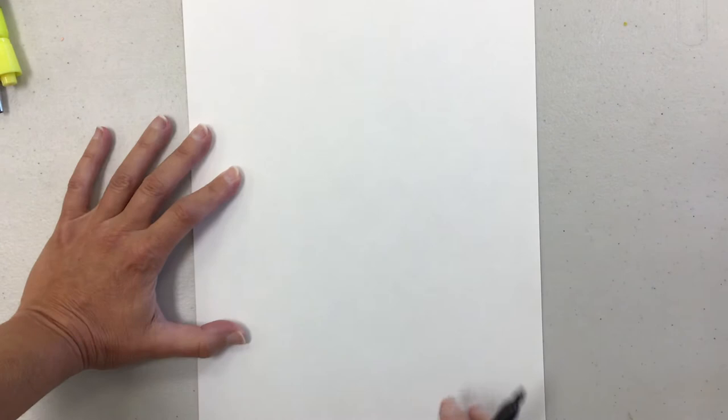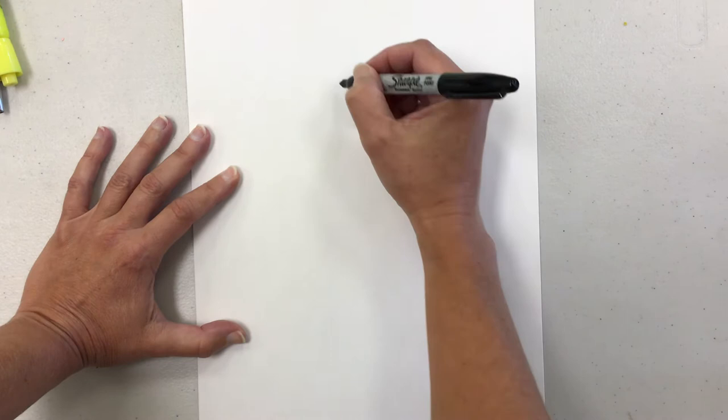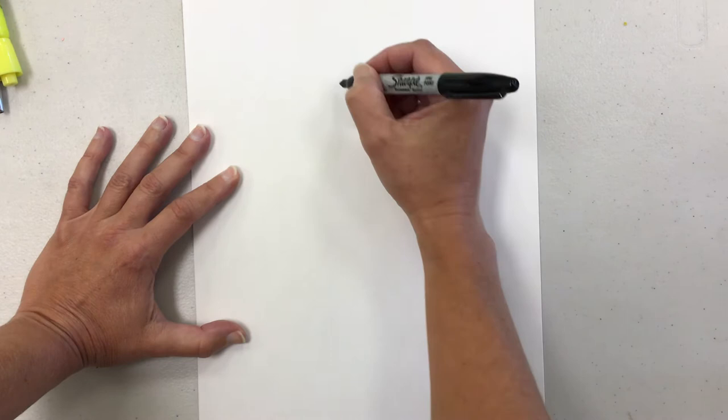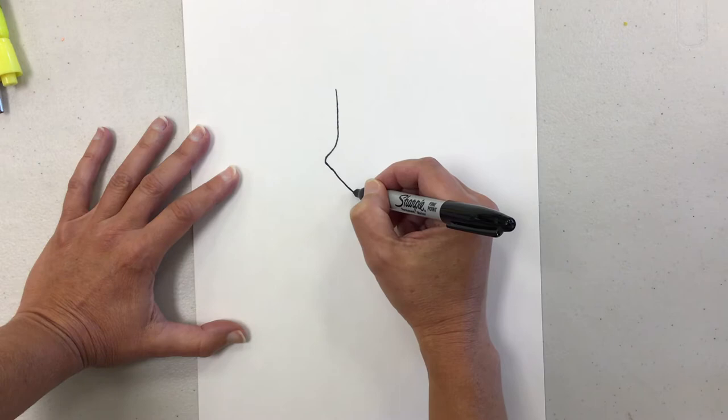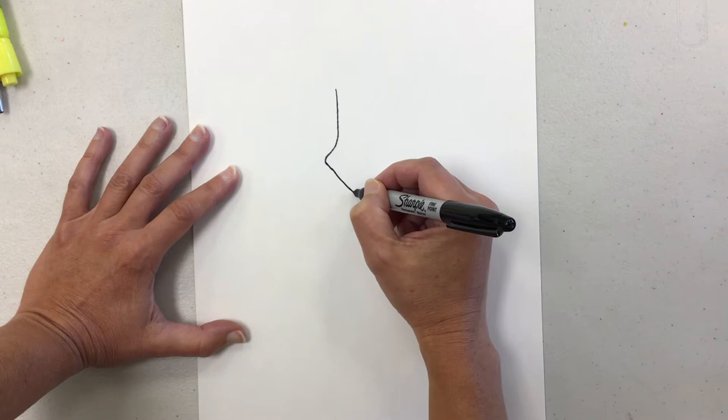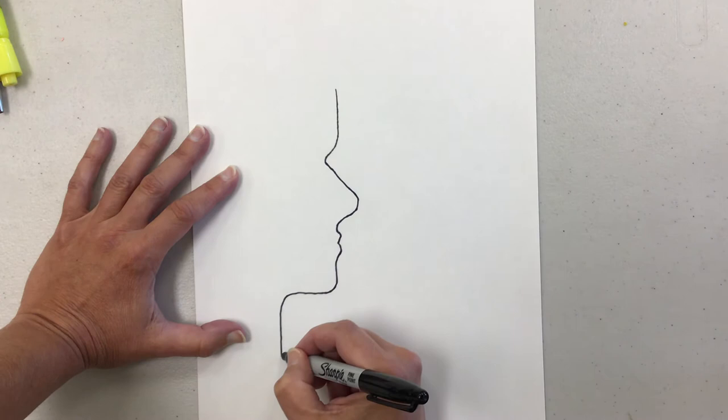I'm going to start by drawing what would be a side profile. That's like looking at yourself from the side. So I would have my forehead, you can see I'm sort of starting the upper part of my paper, I would have my eye, my nose, and then my mouth, my chin, my neck.